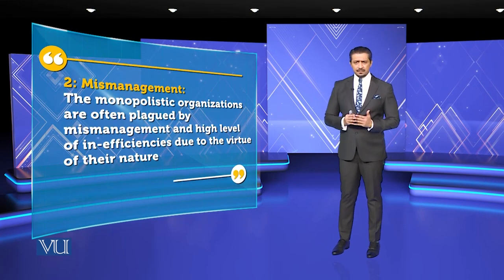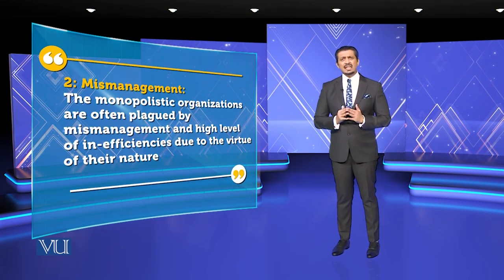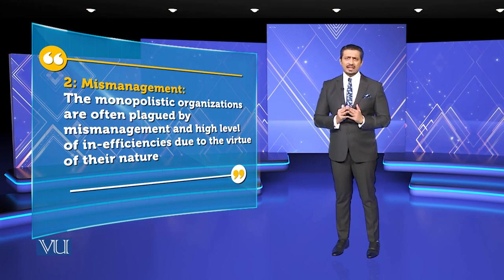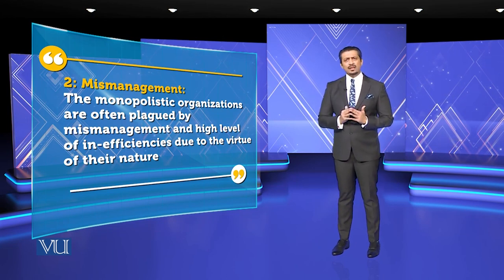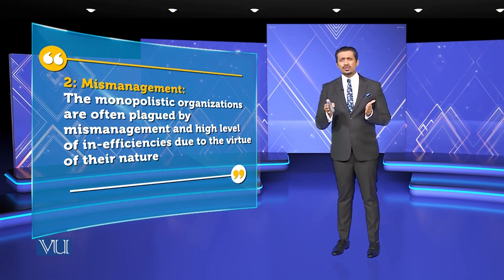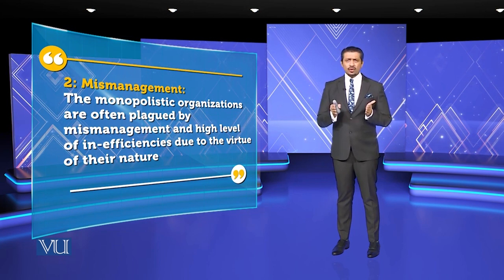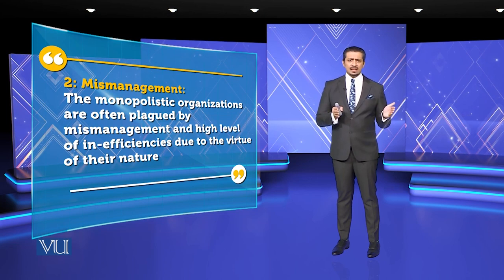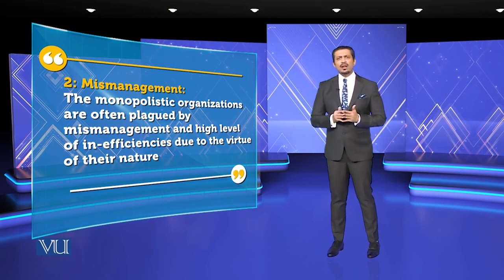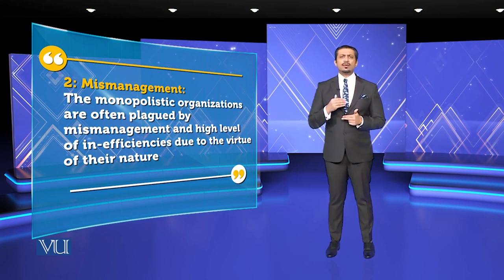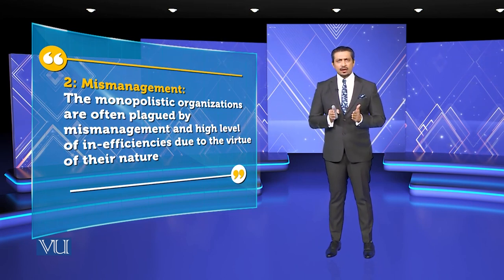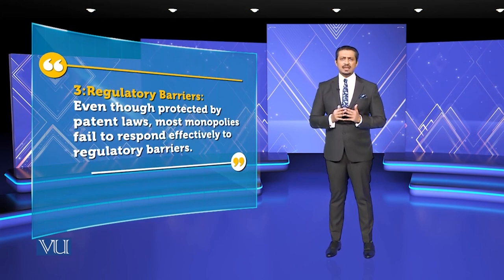Secondly, mismanagement — inefficiency is the biggest mismanagerial aspect of X-efficiency. Then it is regulations — normally it is policies and procedures: your government trends, your Ministry of Commerce and Industries, your policies change. For example, if you have regulatory changes, they can significantly affect a monopoly.